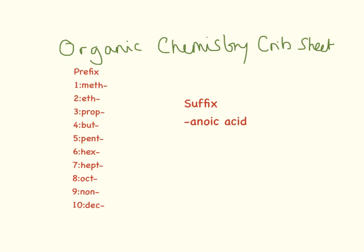This is our organic chemistry group sheet. It has our prefixes and suffixes that we need to know for this video. To quickly remind you: if something has one carbon it starts with 'meth', three carbons starts with 'prop', and six carbons starts with 'hex'. In this video we're only looking at carboxylic acids, so all of our suffixes are going to be '-anoic acid'.